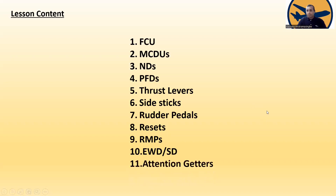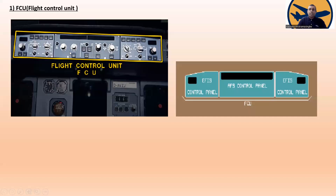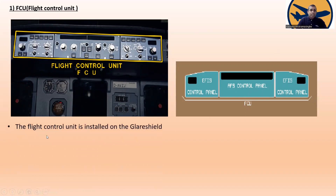Let's start with number one: FCU — Flight Control Unit. You can see the flight control unit here. The FCU has the flight control panel, the auto flight system control panel, and the electronic flight instrument system control panel. All these panels together are called the flight control unit. The flight control unit is installed on the glareshield.